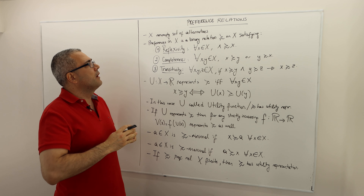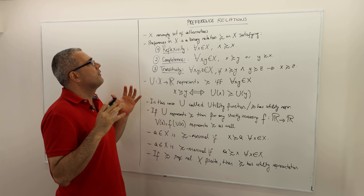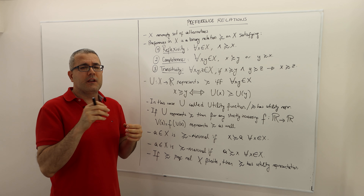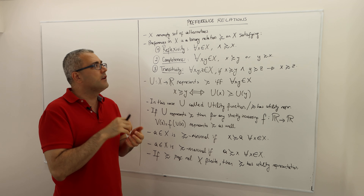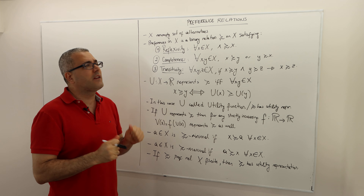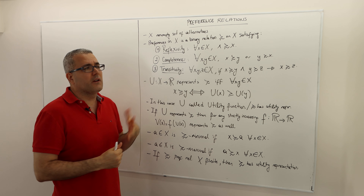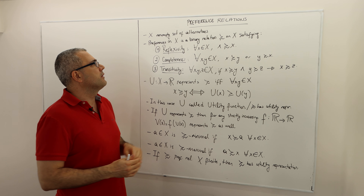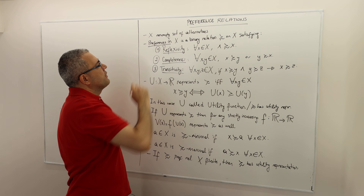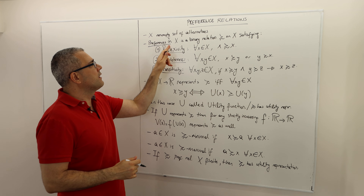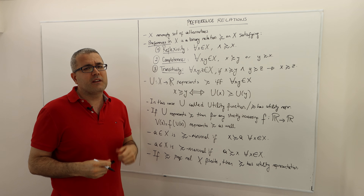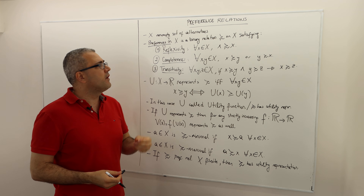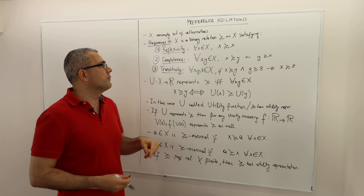We start with the set of alternatives. Let's assume that all the alternatives our decision maker is facing are included in this set X — it's obviously not empty. A preference relation on set X is nothing but a binary relation on this set,